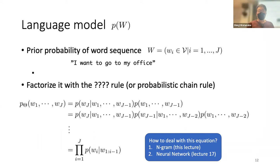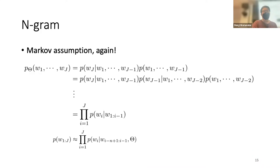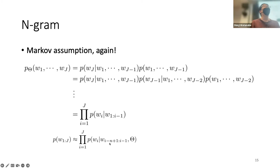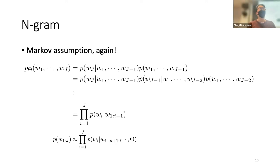Let's move to the explanation about N-grams. In an N-gram we use the Markov assumption: we completely cut the previous history and make the probability depend only on a fixed-length history of length n minus 1. That is the N-gram assumption — instead of considering the entire history, we consider just n, or n minus 1, previous words.